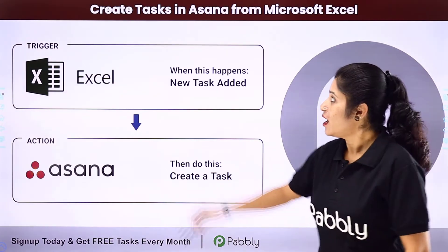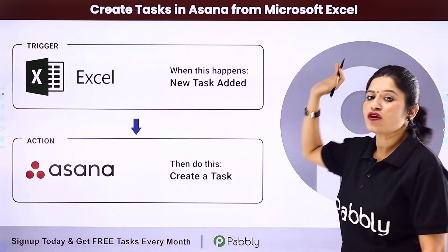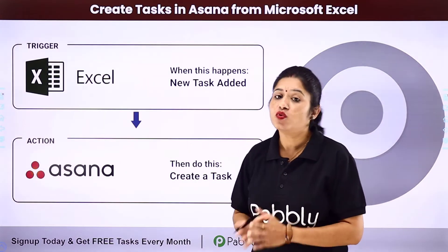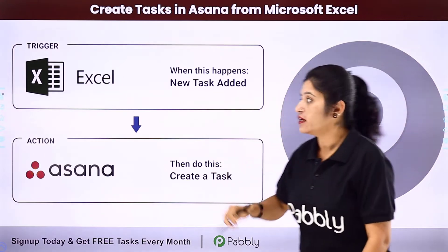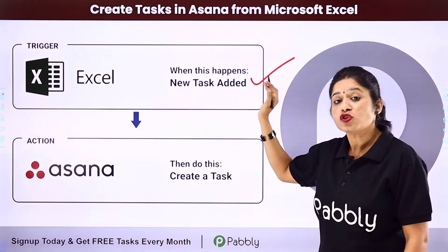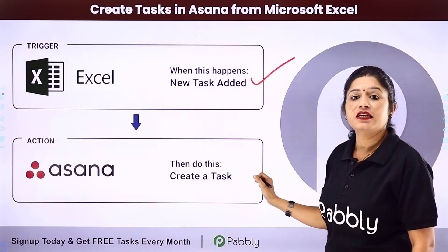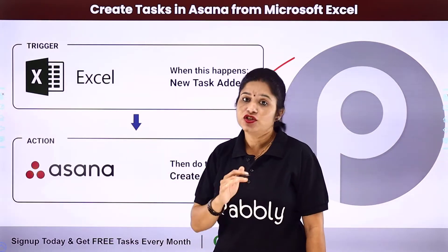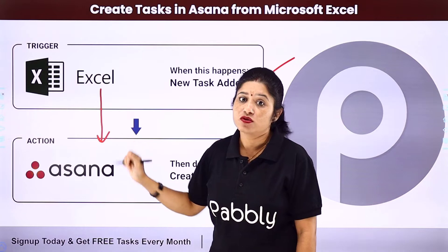In this video, we are going to learn how you can create tasks in Asana from Microsoft Excel. Let's suppose you have created an Excel spreadsheet where you are adding some task details. Now, you want that whenever you add a new task detail to your Excel spreadsheet, automatically using those details, a new task should get created into your task management software, Asana. For that, you need to integrate your Excel spreadsheet with your Asana account.